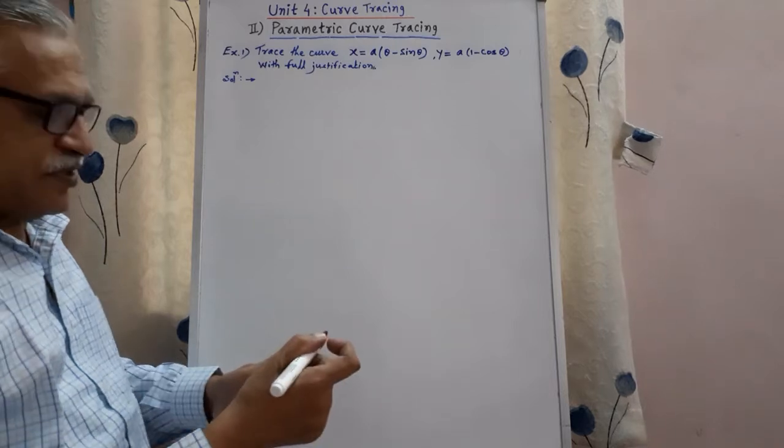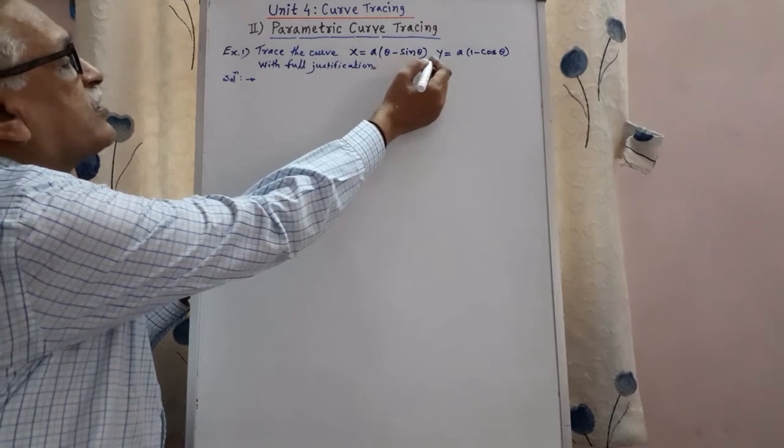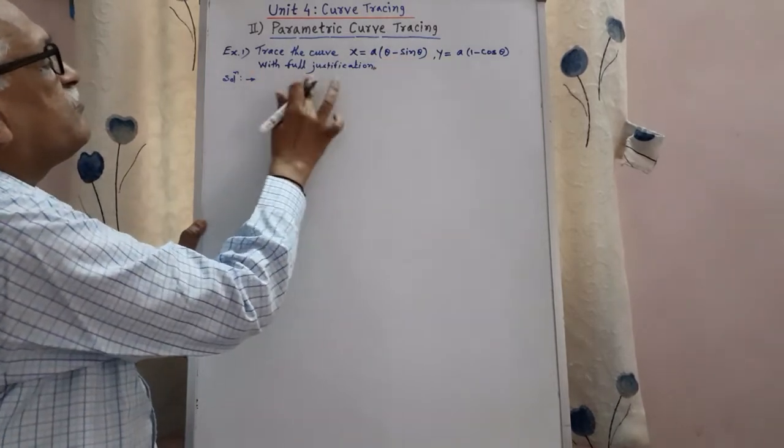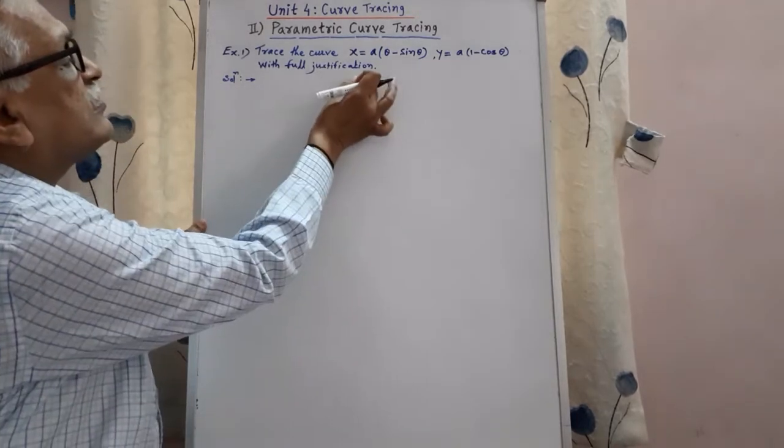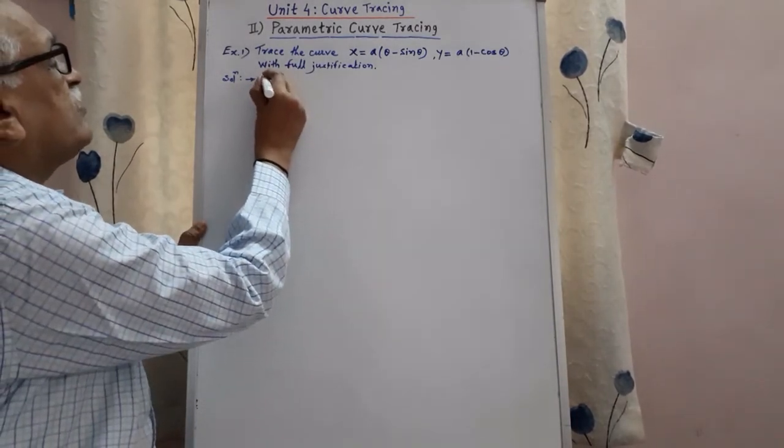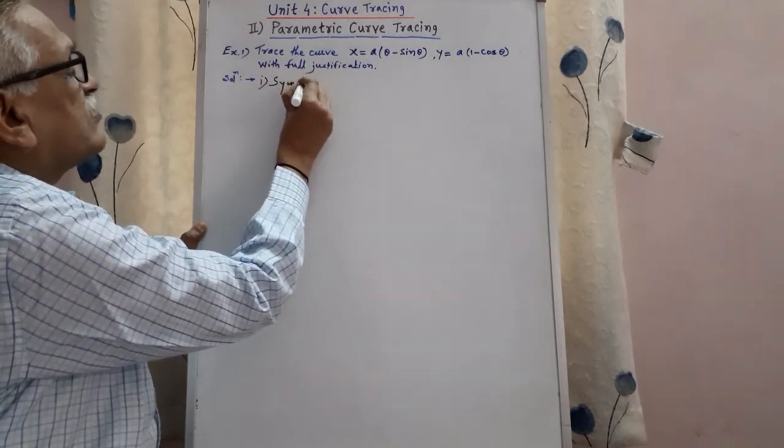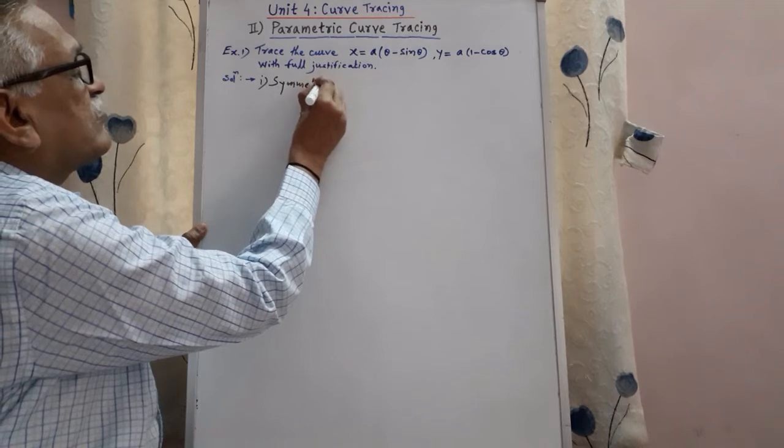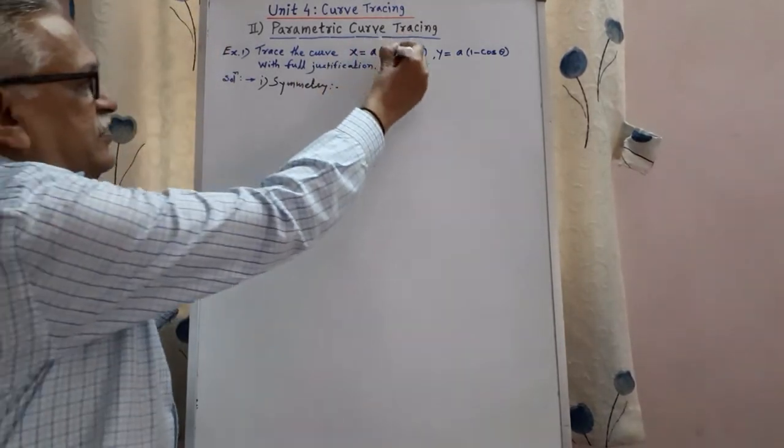Applying the procedure, as it is parametric curve, we follow the procedure. First point: symmetry, replacing theta by minus theta here.